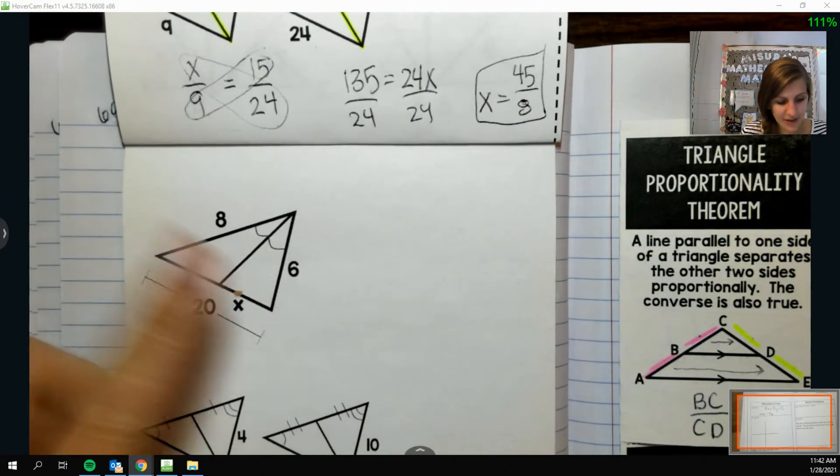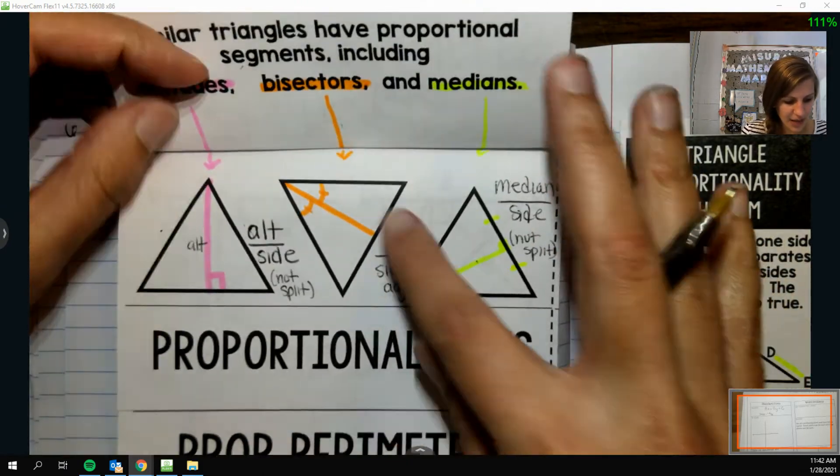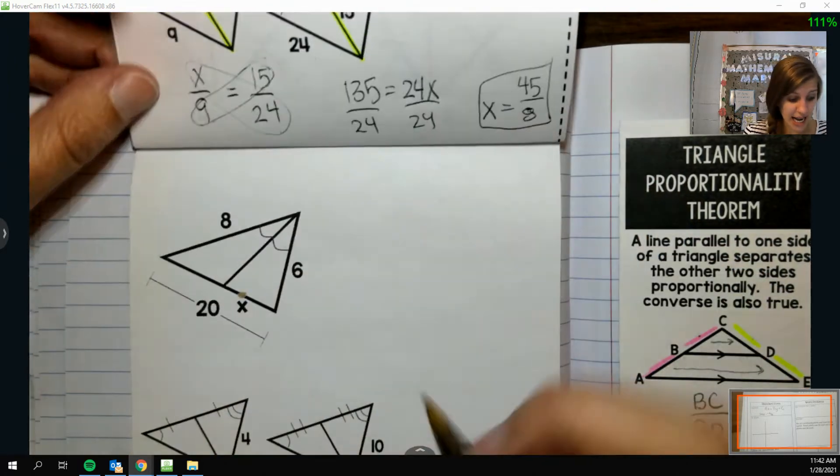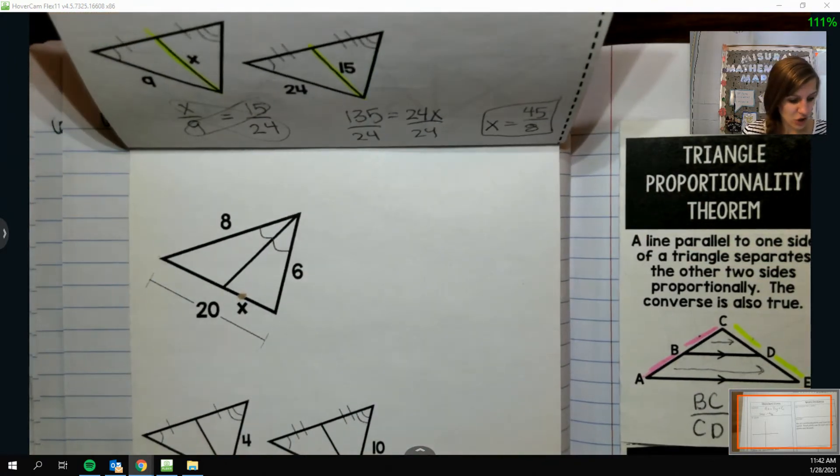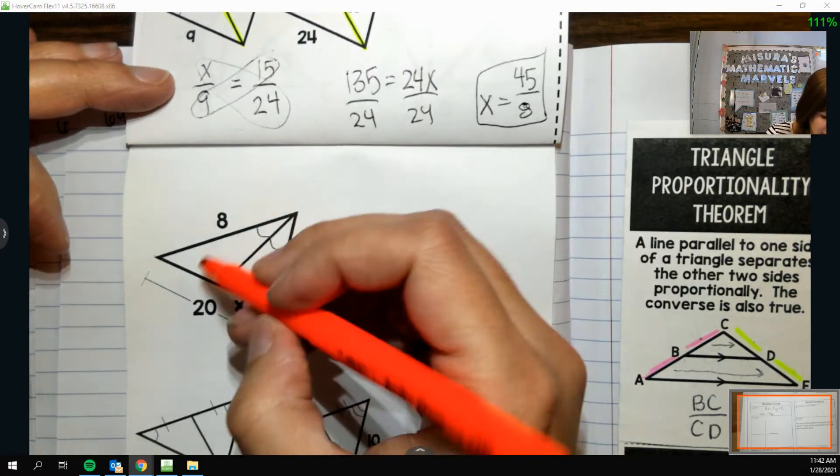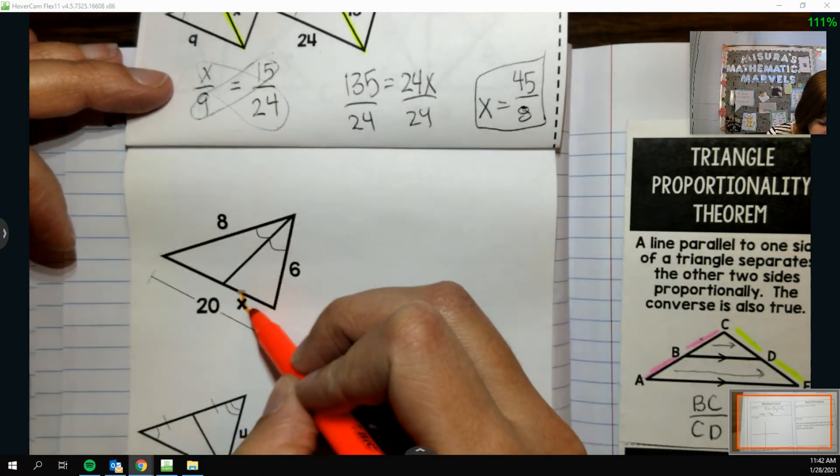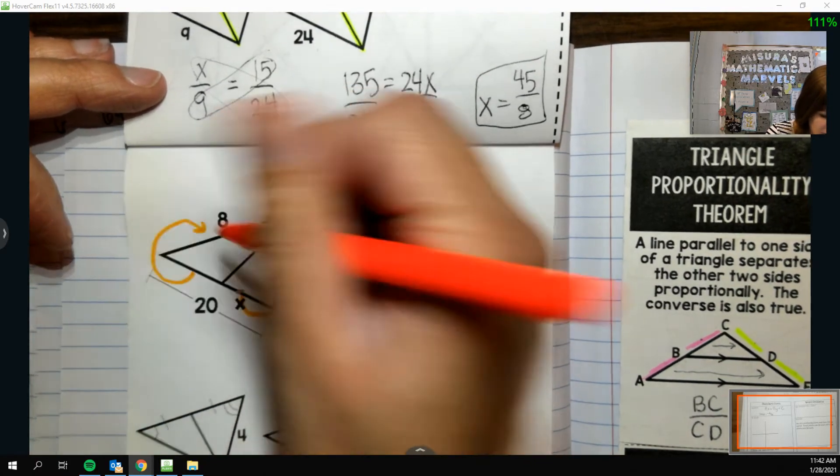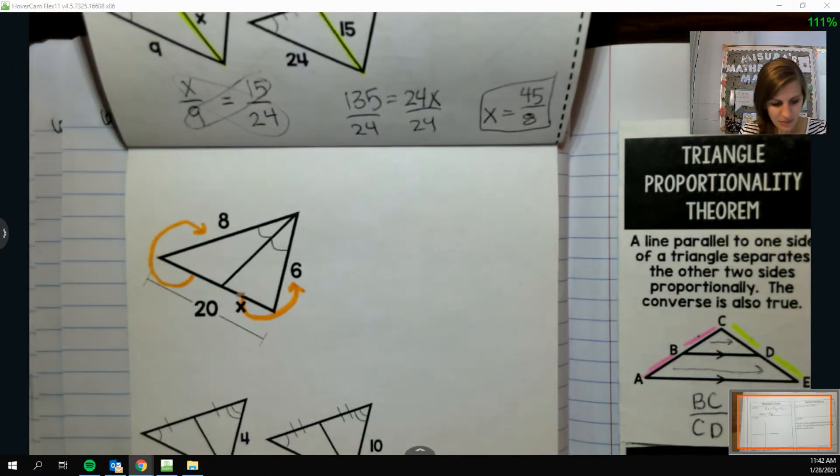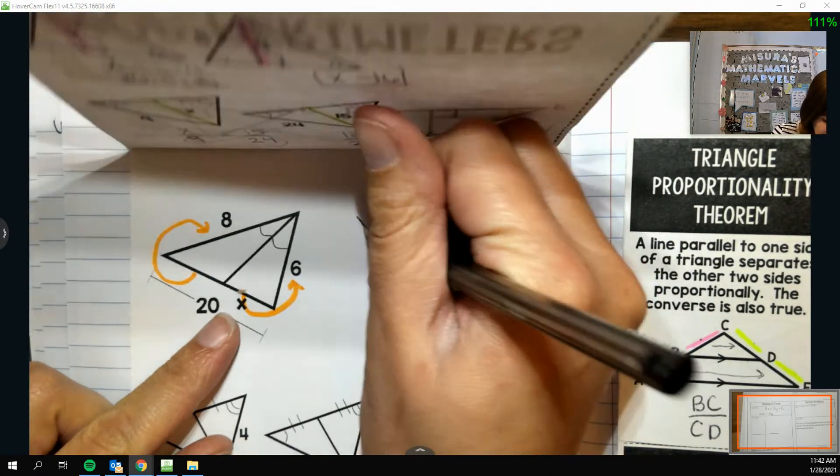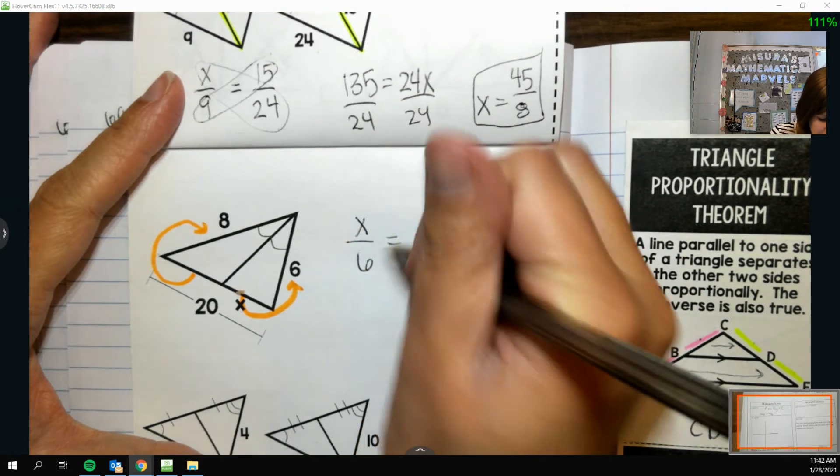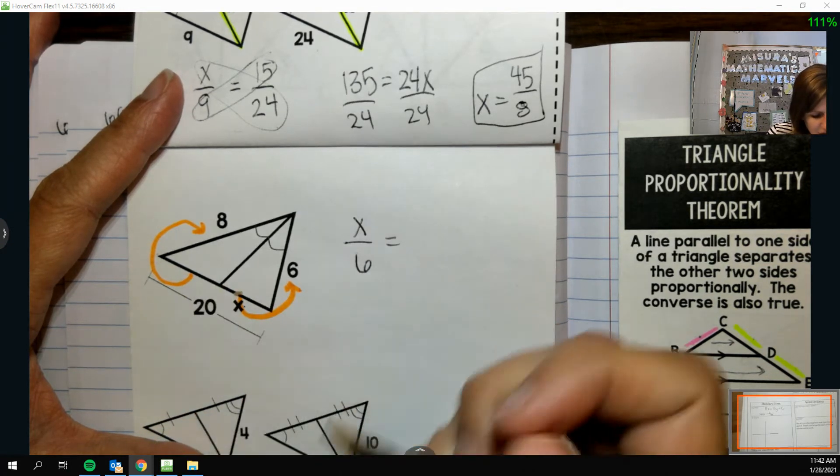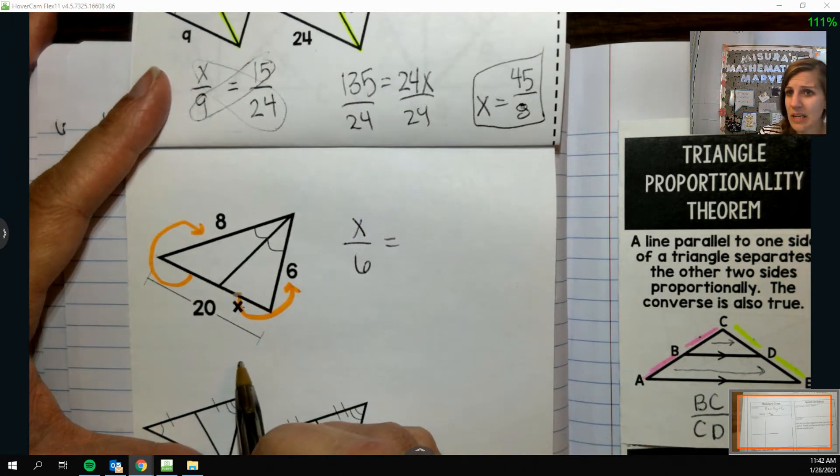Down here, I notice an angle bisector. So the angle bisector one is the split side over the side adjacent. So that one's a little strange. Like, again, I see angle bisector. So I can do split side over side adjacent. Split side over side adjacent. So that's going to look like x over 6, split side over adjacent. And then here,